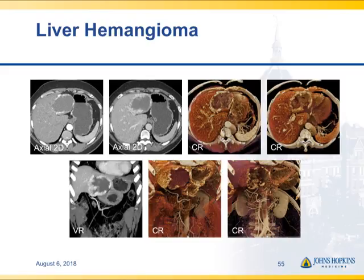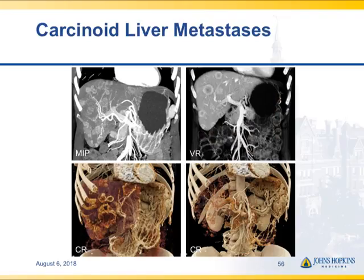Here's a hemangioma with peripheral puddling — look at the peripheral puddling within the cinematic rendering around that mass. We are looking at textural change, enhancement patterns, and everything we knew before plus a number of different features. With carcinoid tumor, again looking at the vascularity, the feeding vessels, the ring-like lesions, with very nice correlation between the MIP, the volumetric rendering, and the cinematic rendering. Not in every case is cinematic rendering better than volume rendering or MIP — it may look different, but often the information is exactly the same, though sometimes we are able to accentuate findings.